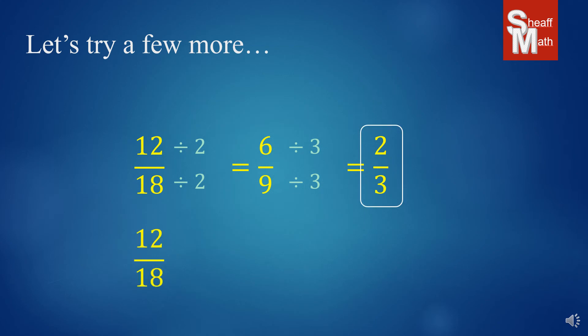Now, could I have shortcutted this? I sure could have, because if I would have just thought, well, I know six goes into both 12 and 18, I could have done that first divided by six over six and gotten my answer a lot quicker, two thirds.